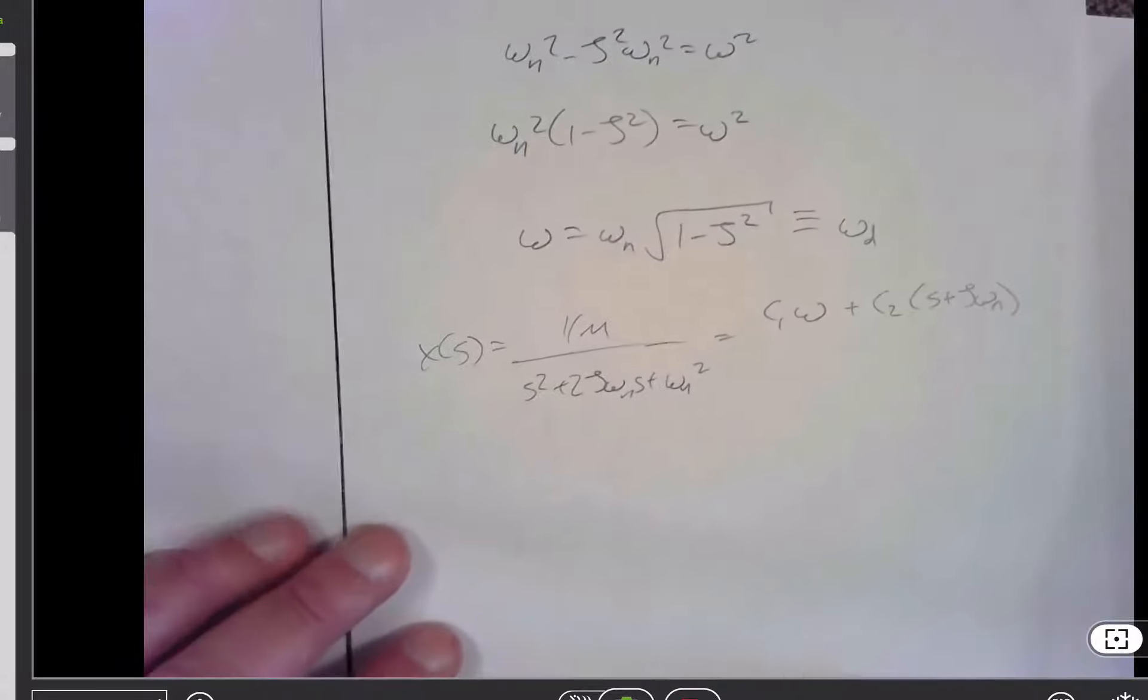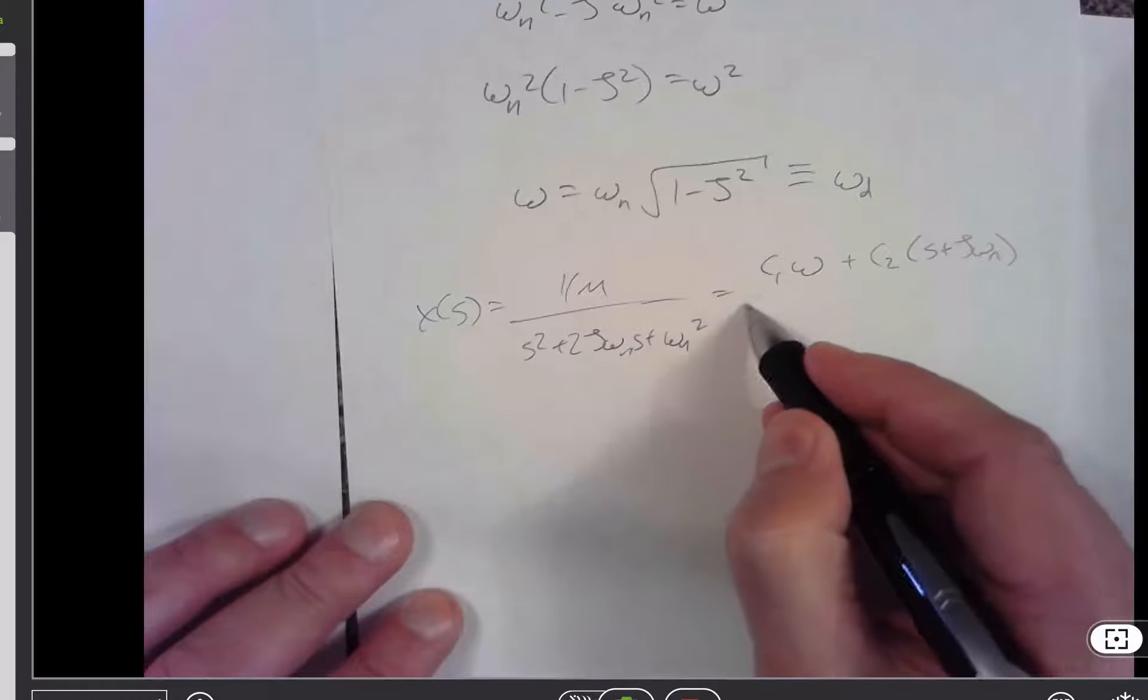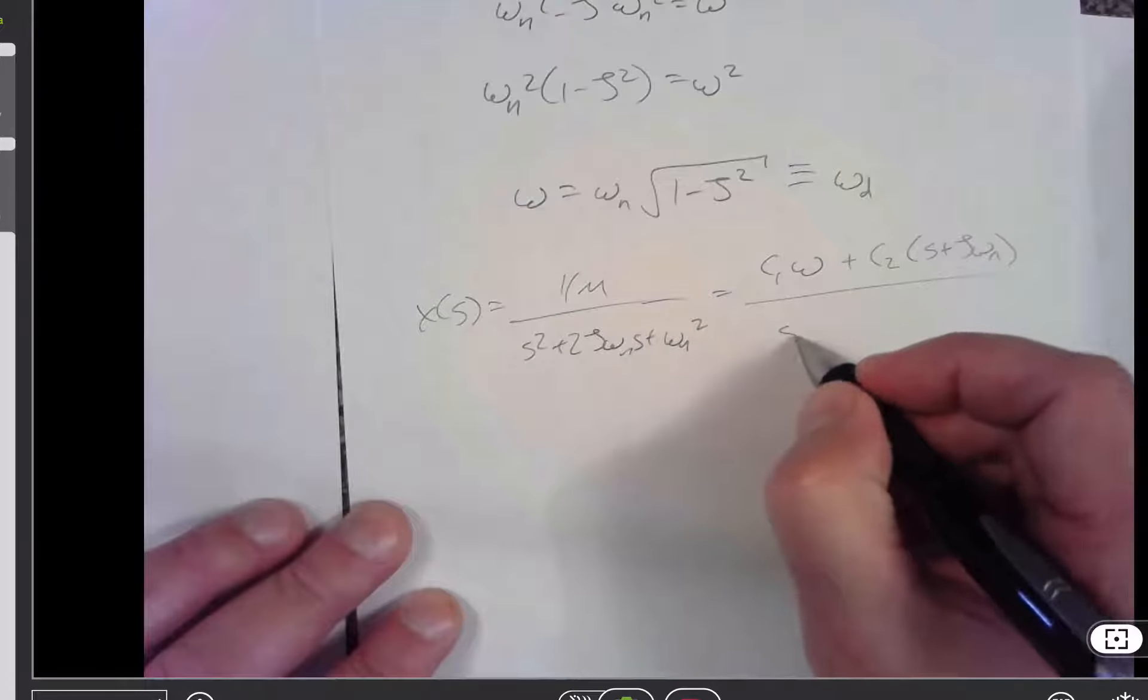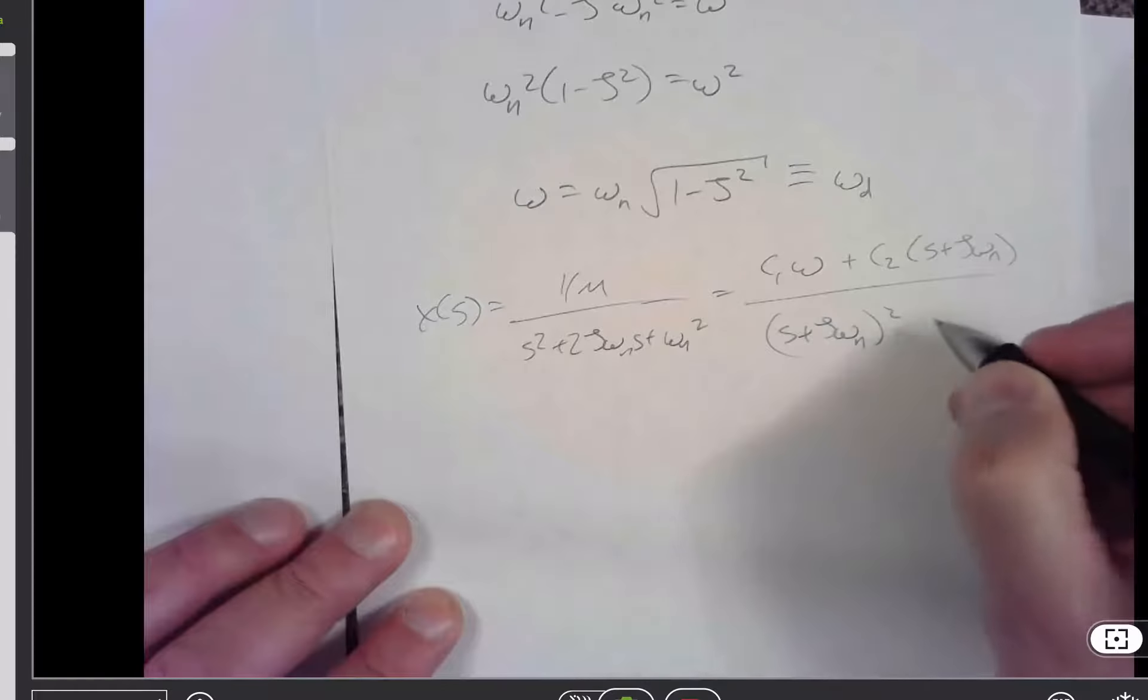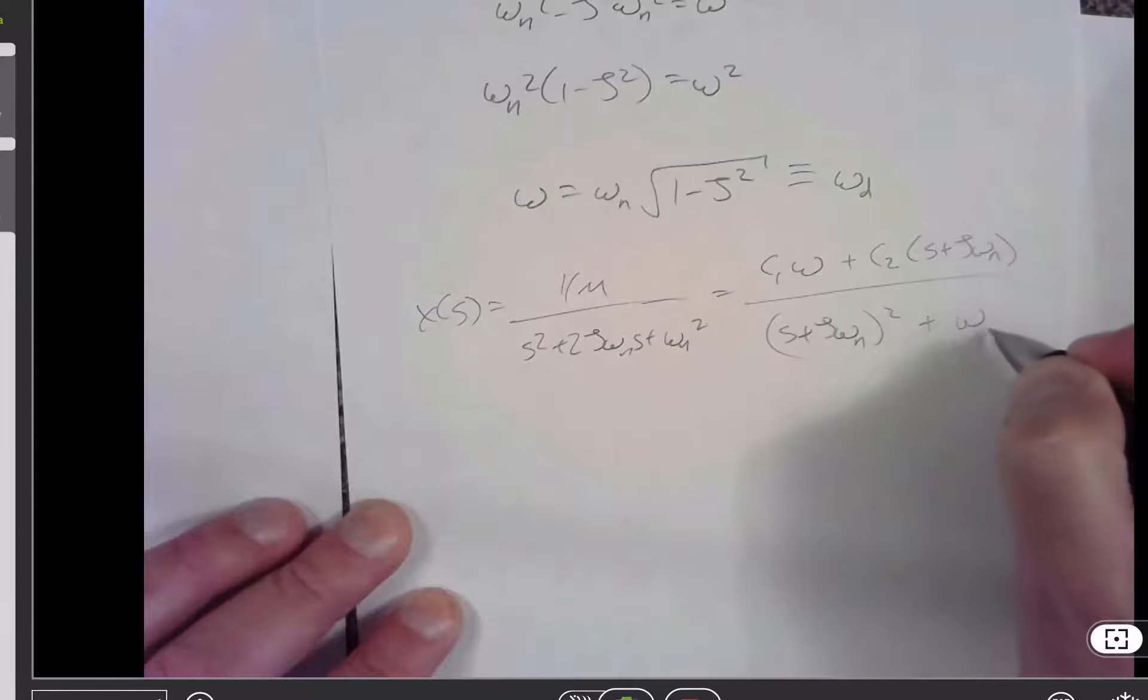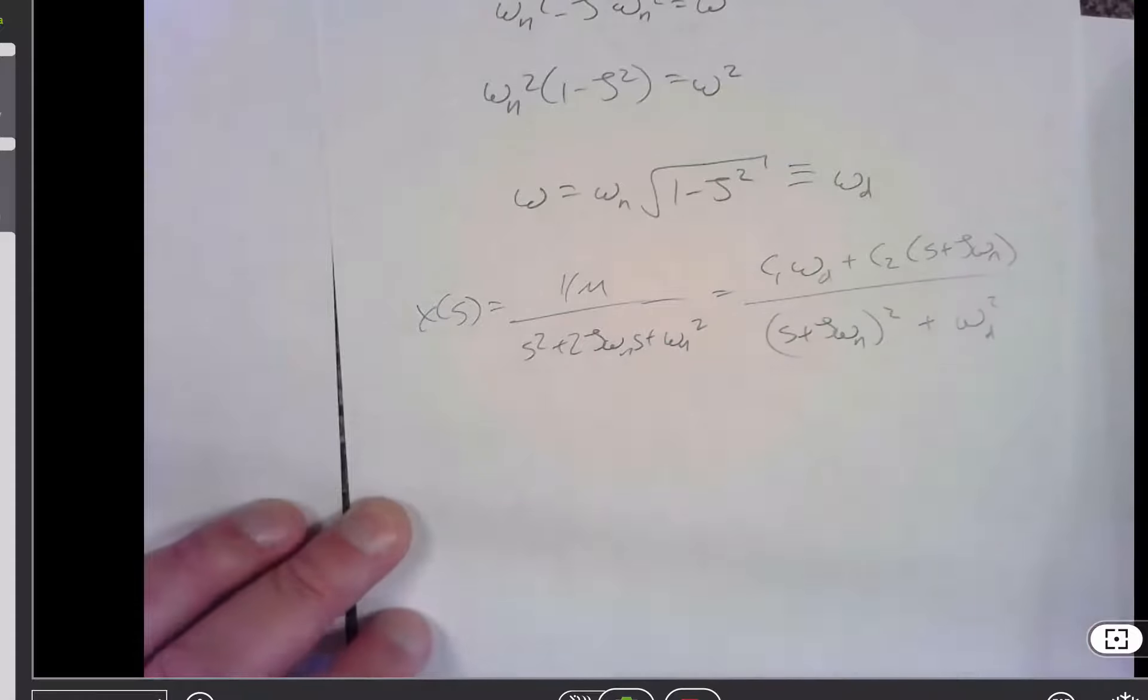Where a is now known to be zeta times omega n, this would be s zeta omega n quantity squared plus omega n squared, and this is omega d, and this is omega d.